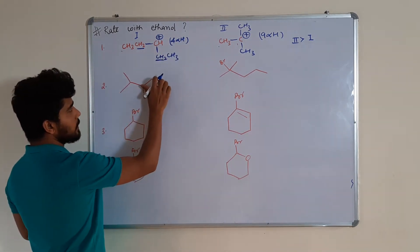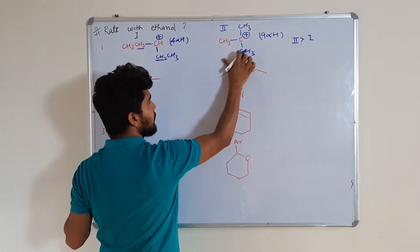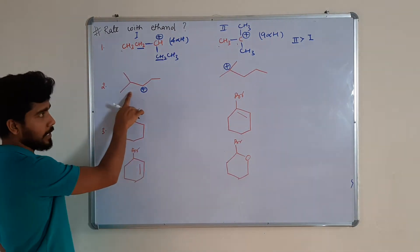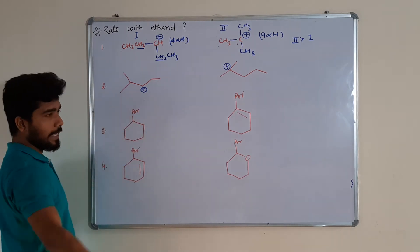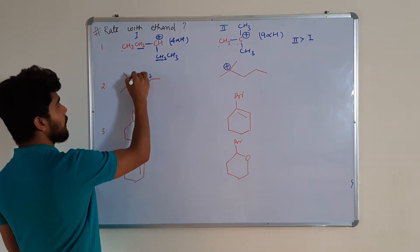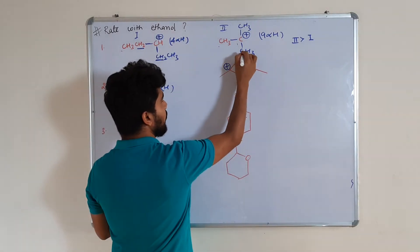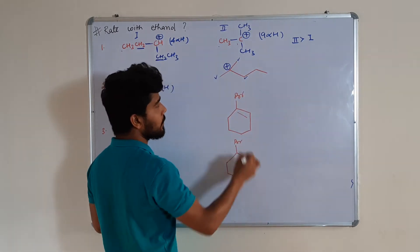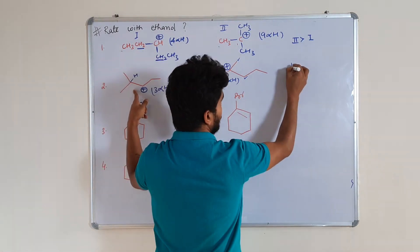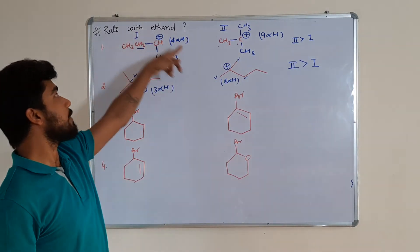Let's move to the next question. Again we will remove the leaving group and form the carbocation. We are not concerned about rearrangement because the rate is determined by the first carbocation formed, not the rearranged carbocation. This carbocation has two alpha hydrogens at one position and one alpha hydrogen at another position, giving a total of three alpha hydrogen atoms. The second carbocation has three alpha hydrogens here, three here, and two here — a total of eight alpha hydrogen atoms. So the second is more stable, and the rate of the second substrate will be faster than the first when reacting with ethanol.